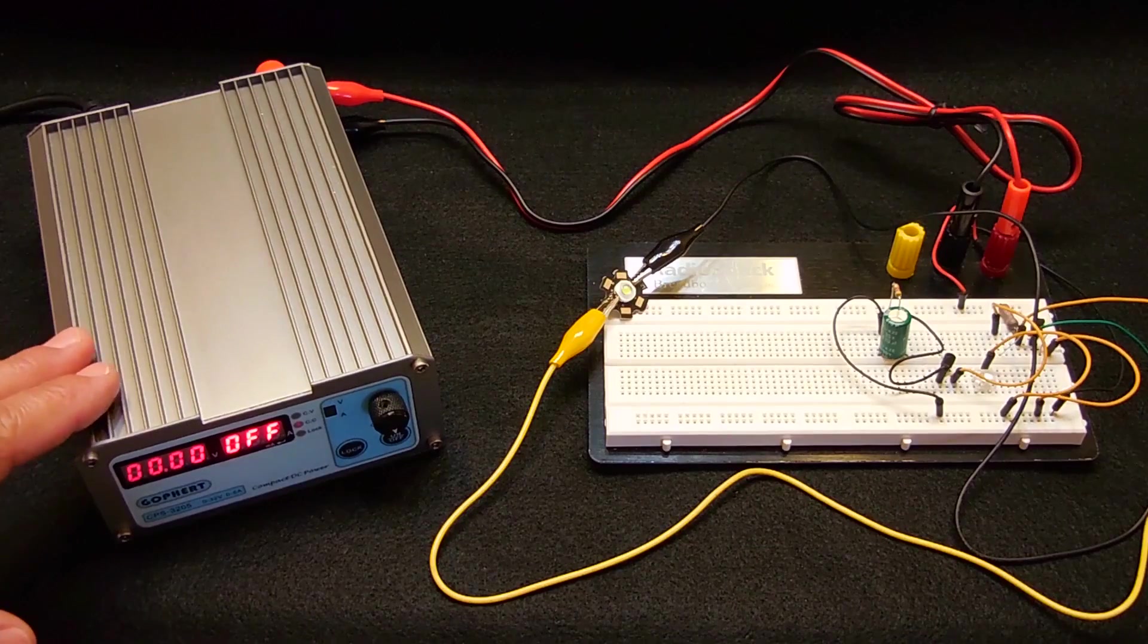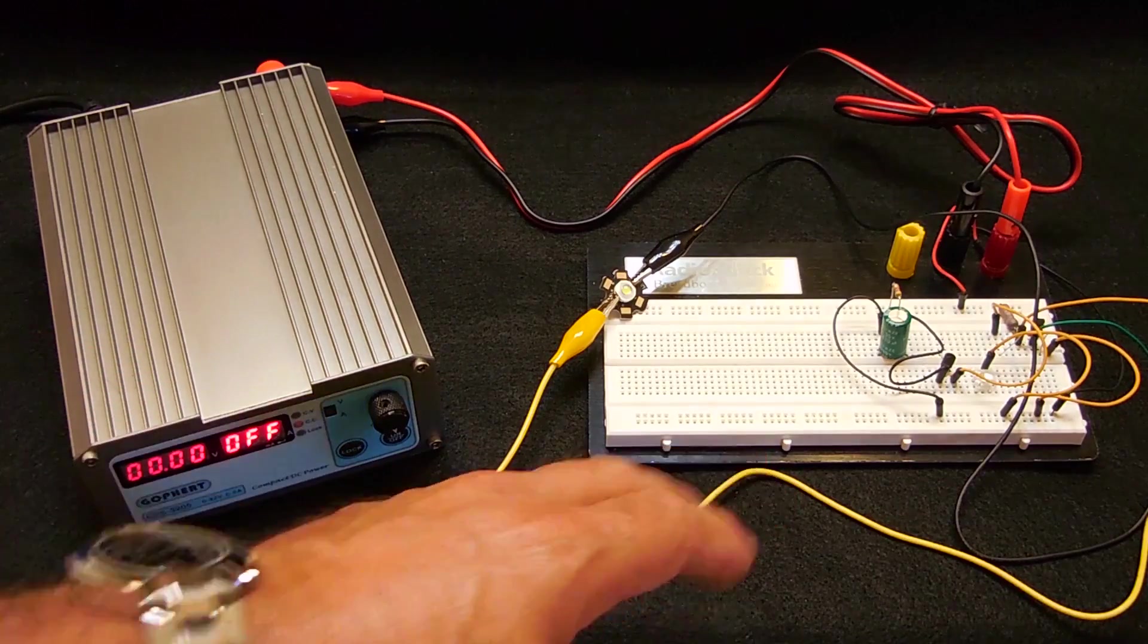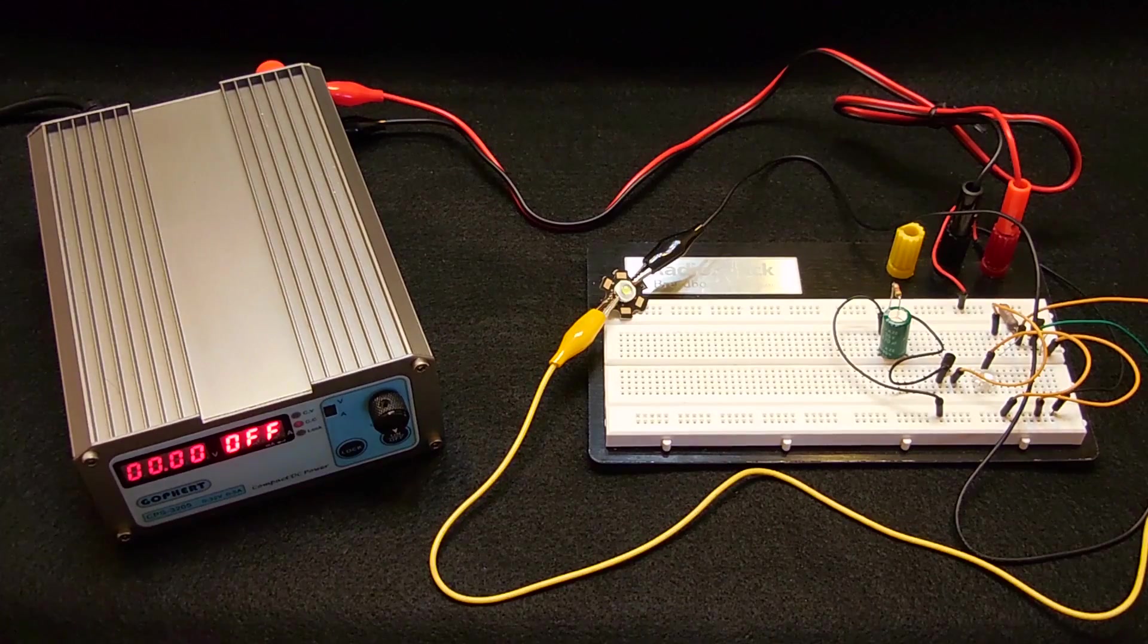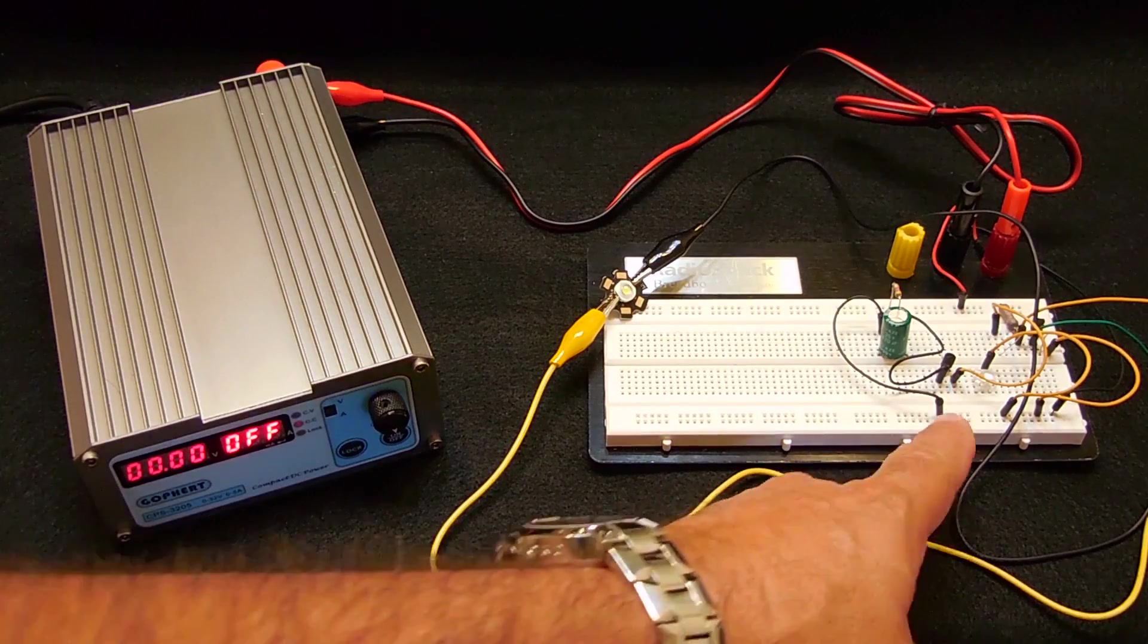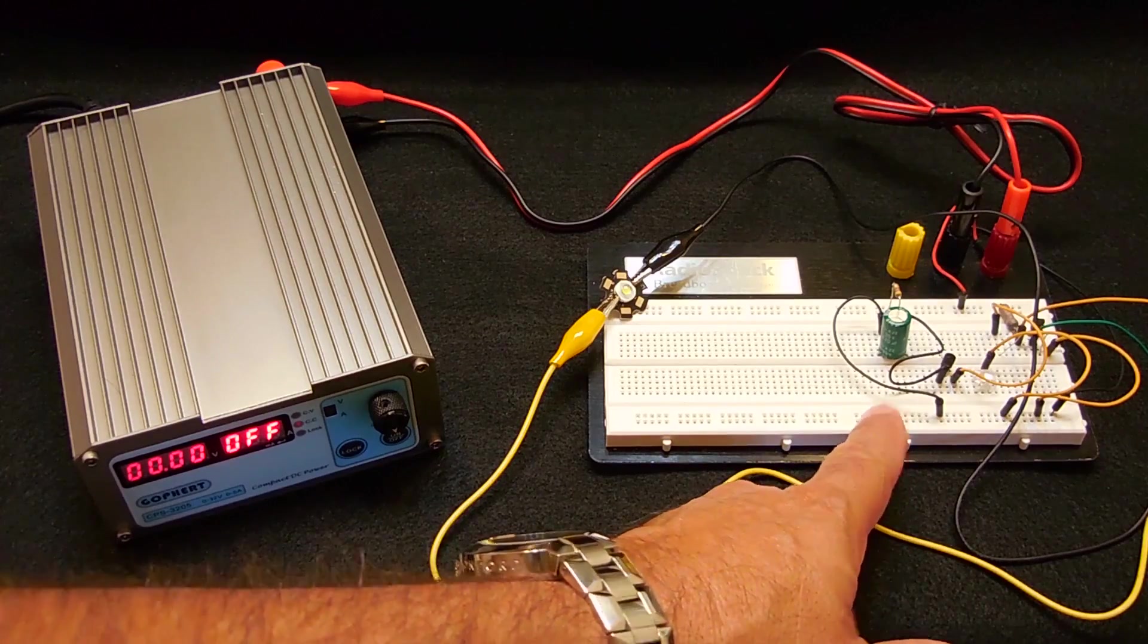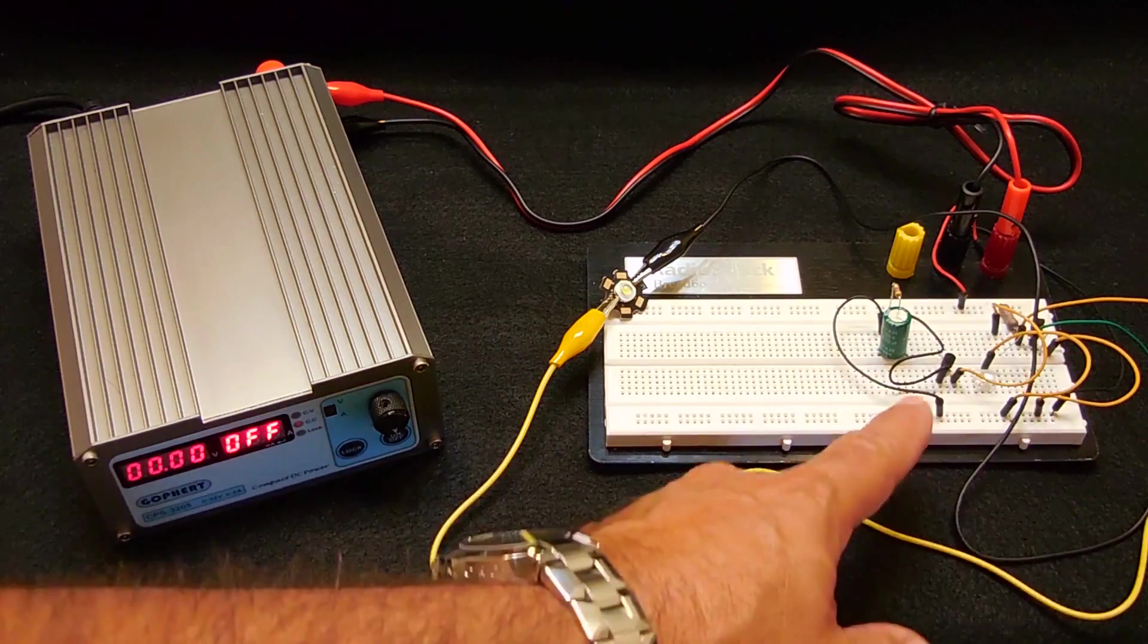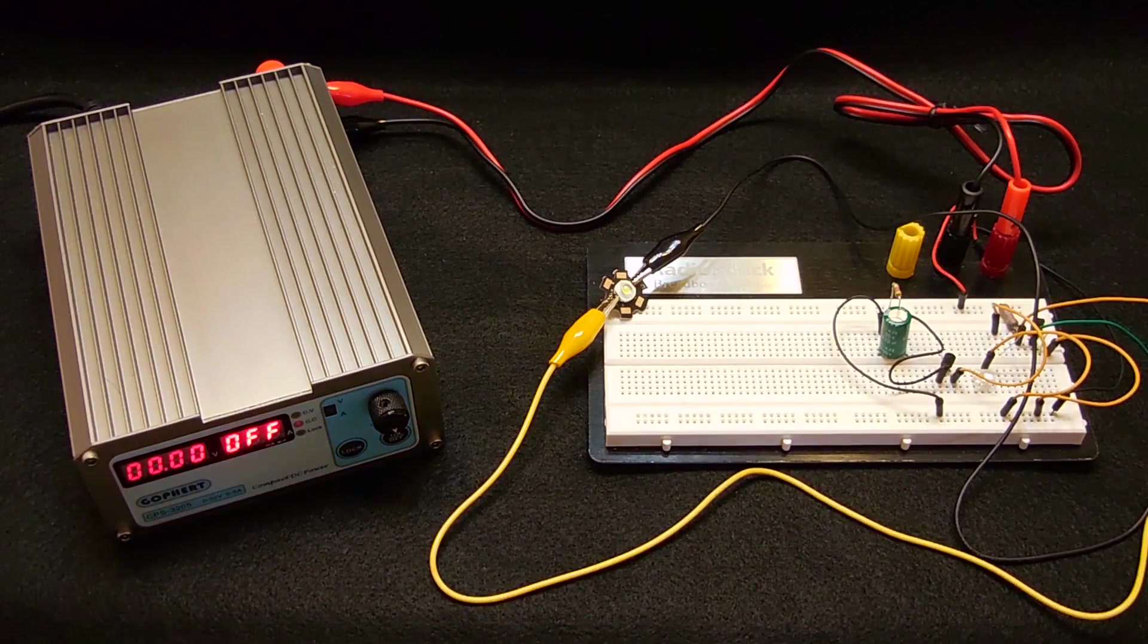As you can see, I have my power supply unit all ready to go. The circuit's assembled on the breadboard. The way it's set up, from here to the left is the simplified version. And when you combine everything together, that is the higher current version.